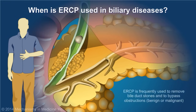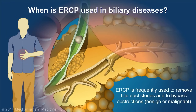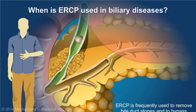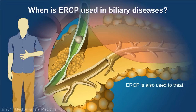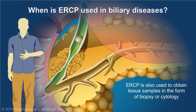In the biliary tree, ERCP is frequently used to remove bile duct stones and to bypass obstructions that can be benign or malignant. ERCP is also used to treat strictures, infections such as cholangitis, leaks after surgery such as gallbladder removal, and to obtain tissue samples in the form of biopsy or cytology.